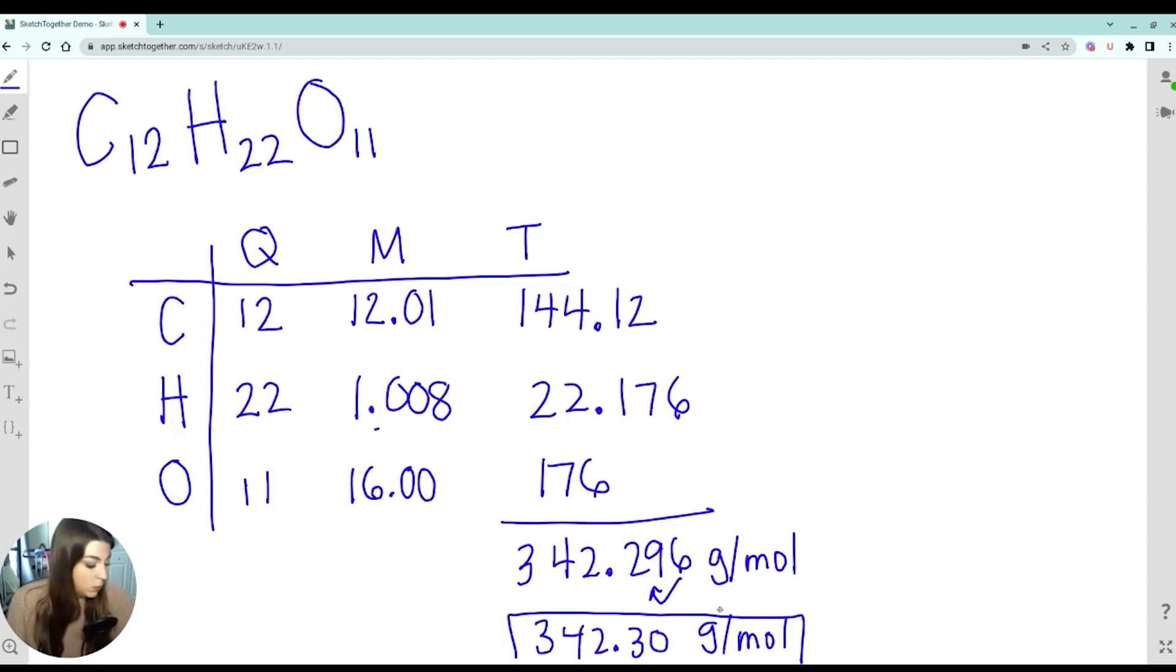And that is our final answer for the molar mass. And no matter what experiment you did, like what quantities, that would have been the molar mass of sucrose. So the next thing we have to do is figure out the number of grams of the Kool-Aid powder that we would need in order to make the 1 molar, the 0.5 molar, and the 0.25 molar solutions.